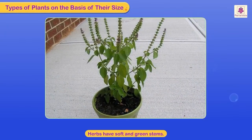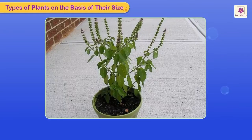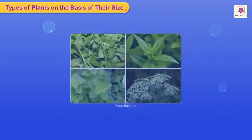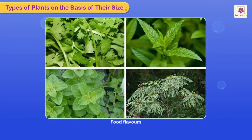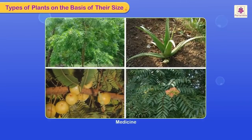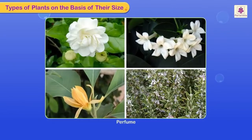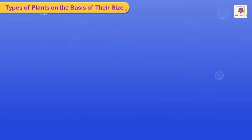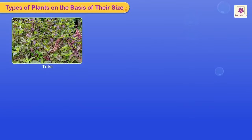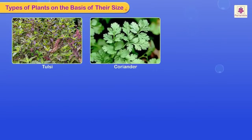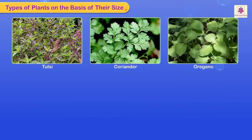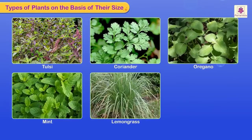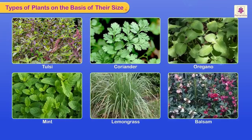Herbs are small plants with soft and green stems. They are used to flavour food, medicine, or perfume. Basil, that is Tulsi, Coriander, Oregano, Mint, Grass, and flowers like Balsam are a few common herbs.